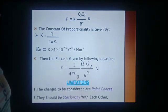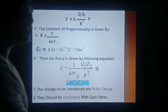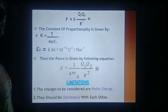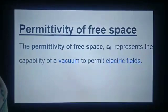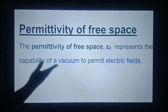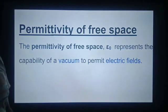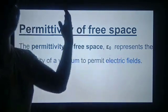What are the limitations of Coulomb's law? There are two limitations. Number one, the charges must be point charges and they must be stationary. Now what do you mean by permittivity of free space? The permittivity of free space epsilon 0 represents the capability of vacuum to permit electric field.